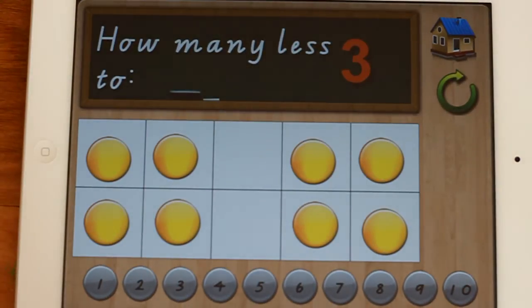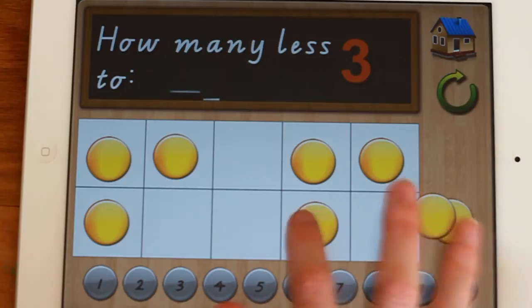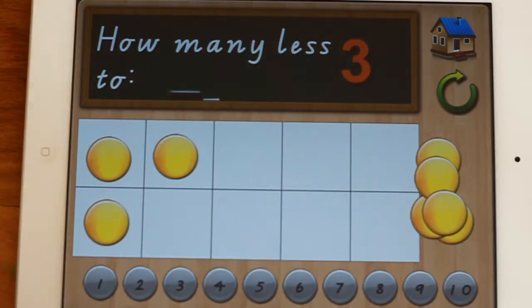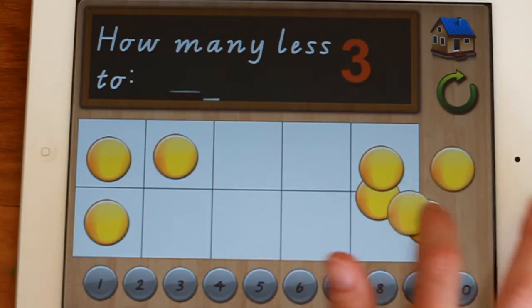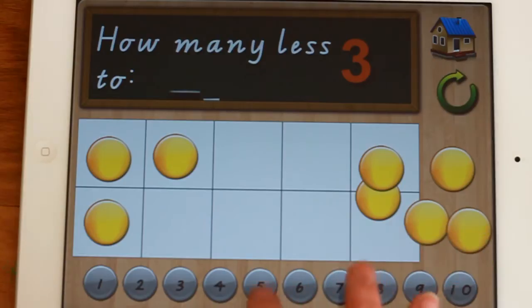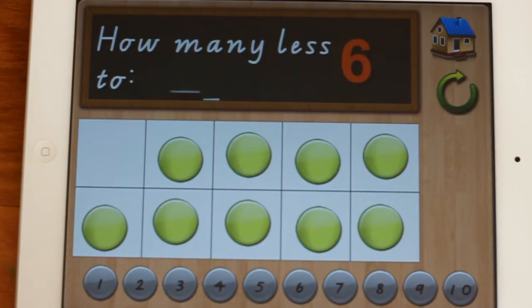How many less to three? So obviously this is subtraction. So picking up these ones and dragging them away. Knowing once again that that's what three looks like, and then counting these counters. One, two, three, four, five.